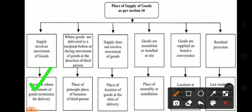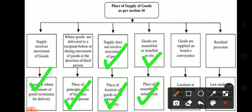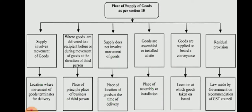Where goods are delivered to a recipient before or during movement of goods at the direction of a third person, then the principal place of business of that third person will be taken as place of supply. Where supply does not involve movement of goods, then the place of location of goods at the time of delivery. Where goods are assembled or installed at site, place of assembly or installation. Where goods are supplied on board a conveyance, then the location at which goods are taken on board.